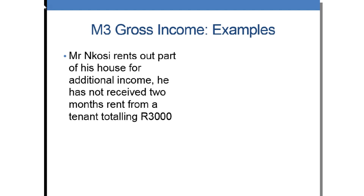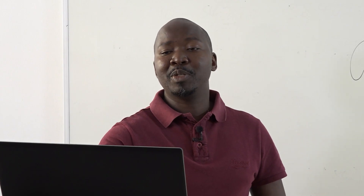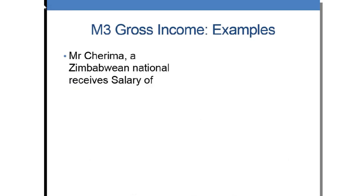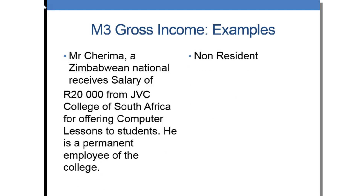Example 3: Mr. Ngozi rents out part of his house to a tenant and receives 3,000 rand. Even though Mr. Ngozi has a salary, the additional rent will also be part of his gross income — there must be a total amount in cash or otherwise, received or accrued to. Even if the tenant didn't pay on time, Mr. Ngozi will still have to pay tax on this amount. Similarly, Mr. Cherima, who is Zimbabwean but receives a salary in South Africa — the source of income is South Africa, so even though he is a non-resident, we tax him in the Republic.